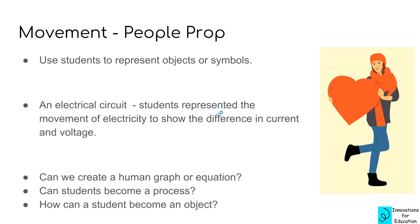The next movement hook is called the people prop — use students to represent objects or symbols. The example is an electrical circuit: students represented the movement of electricity to show the difference in current and voltage, where how fast they were moving and how many students moved at one time represented the flow of electricity. Questions to ask: could you create a human graph or equation? Could students become a process or an object?